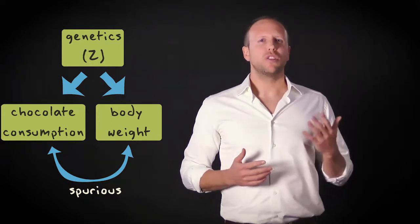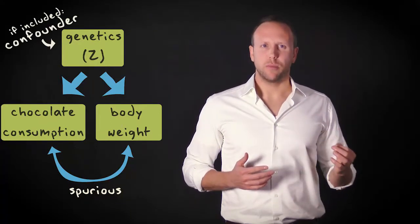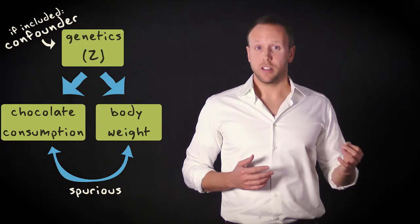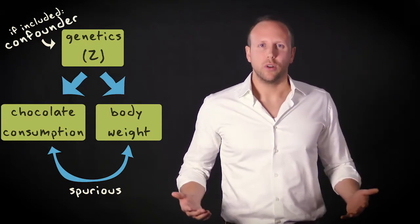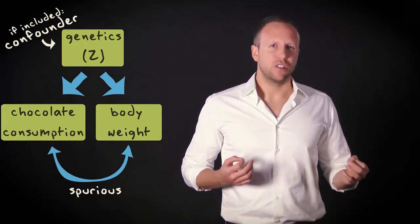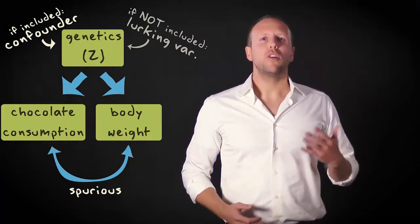In this example, we would call genetics a confounding variable if we had included it in our study. If it was not included, but could have the potential for confounding, we would call it a lurking variable.